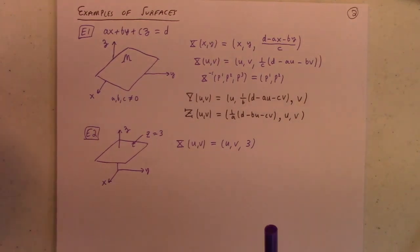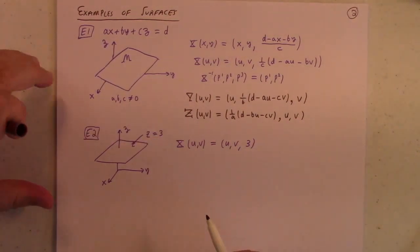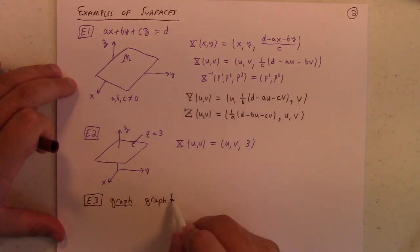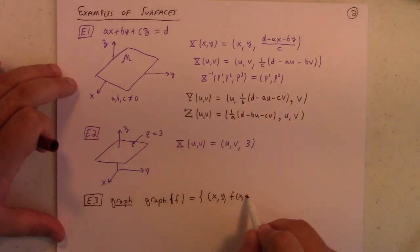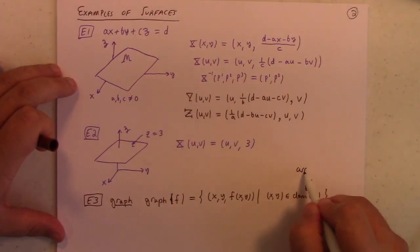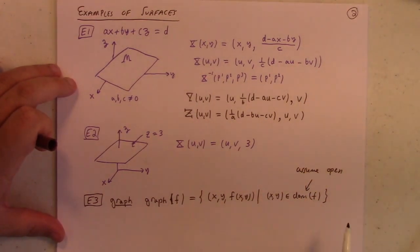Generically speaking, a nice sort of meta example. It's a simple, it's a graph. So a graph is something like this: graph of f, is by definition the set of points x, y, f of x, y, such that x, y is in the domain of f. Now, provided that the domain of f is open, let's assume that's open. If that's open, then the graph of f gives you an example of a surface. In fact, it's a simple surface.